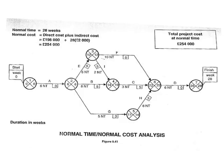The analyzed arrow diagram based on normal time gives an overall project duration of 28 weeks. The total project cost based on normal time has been calculated at 254,000 pounds — that is 28 weeks times 2,000 for indirect costs added to 198,000 in direct costs, giving a total of 254,000 pounds.